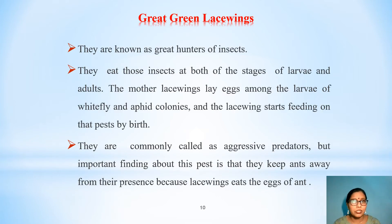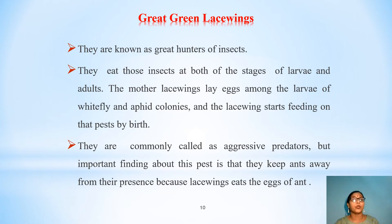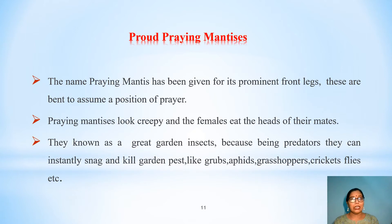The next one is the great green lacewing. This insect is known as a friend of the gardener and also known as a great hunter. They eat insects at both stages — larvae and adult. The lacewing lays eggs among the larvae of whitefly and aphid colonies, and the lacewings start feeding on those pests by birth. They are commonly called aggressive predators. An important finding is that they also keep ants away because lacewings eat the eggs of ants.